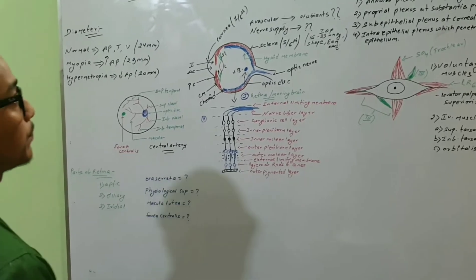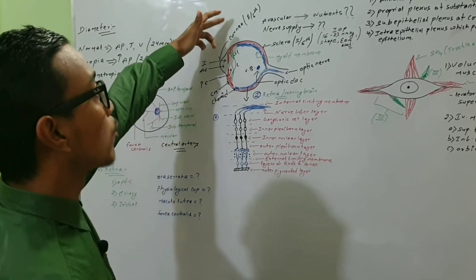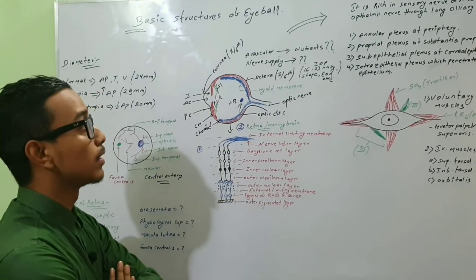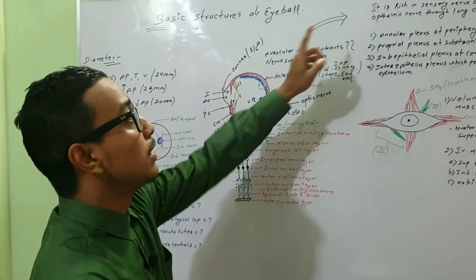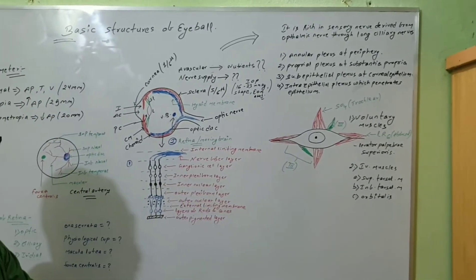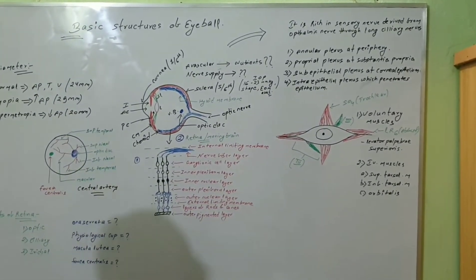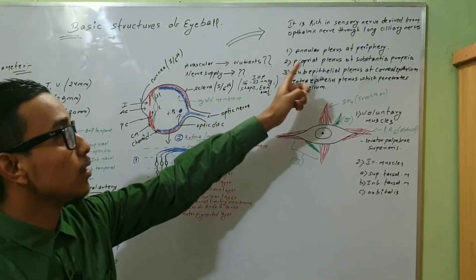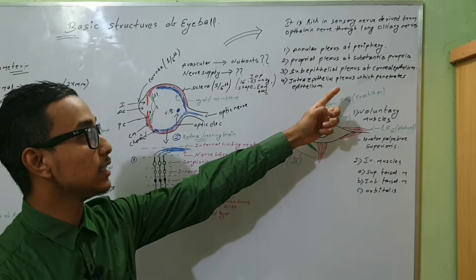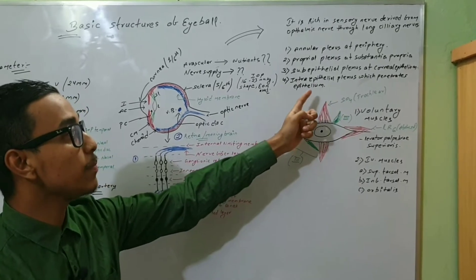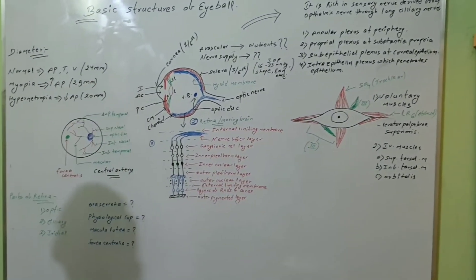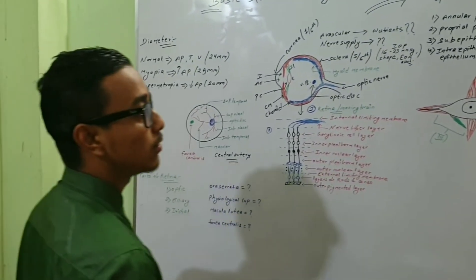Now regarding the cornea — although it is avascular, it has a rich sensory nerve supply derived from the ophthalmic nerve via the long ciliary nerves. The nerve plexuses are: the annular plexus at the periphery, the proprial plexus in the substantia propria, the sub-epithelial plexus beneath the corneal epithelium, and the intraepithelial plexus which penetrates the epithelium.